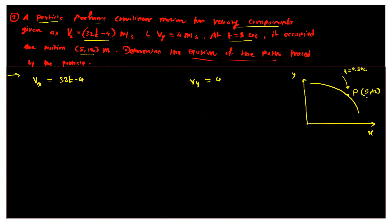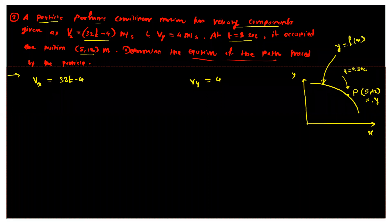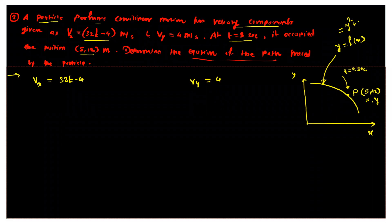The coordinates 5 and 12 represent the x-coordinate and y-coordinate respectively. We have to find out the equation of the path traced by the particle, meaning we need to find the equation in the form y equal to f(x). It may be a parabola with an equation involving y-squared terms. We have to find this equation of y as a function of x.